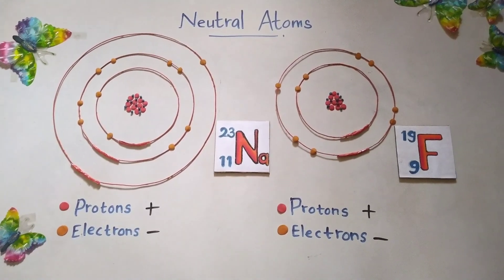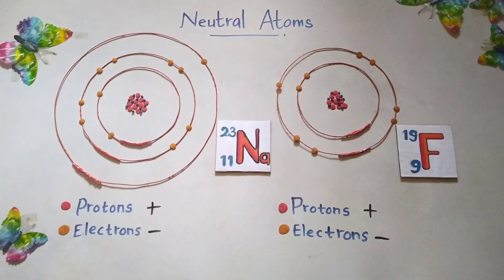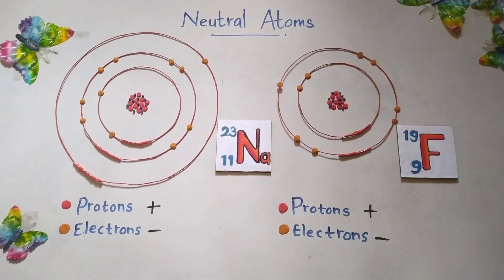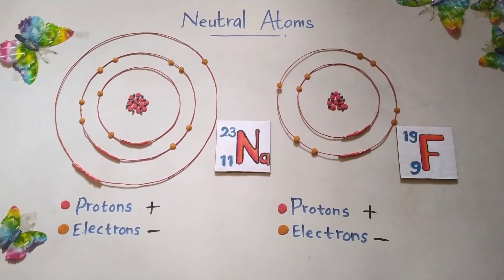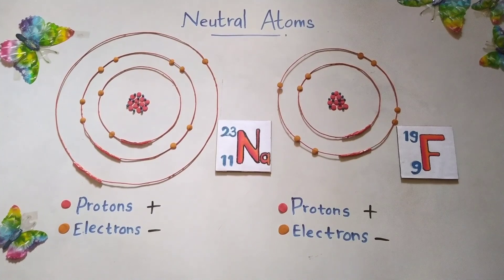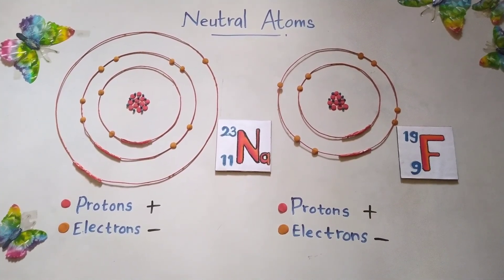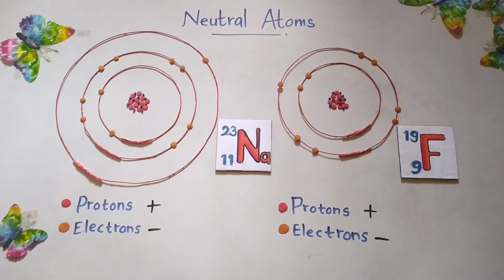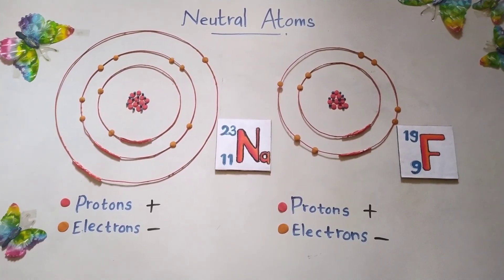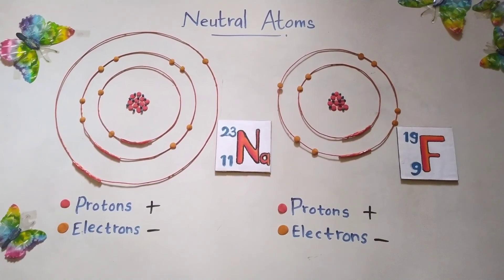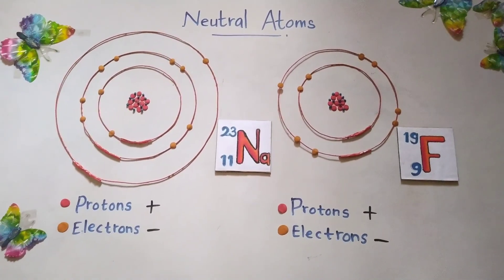I have selected one sodium atom and one chlorine atom to describe neutral atoms. You already know that there are three main subatomic particles in any atom. They are protons, electrons, and neutrons. Protons are positively charged particles, electrons are negatively charged particles, whereas neutrons have no charge. So here, I don't consider neutrons.